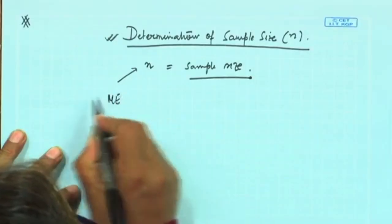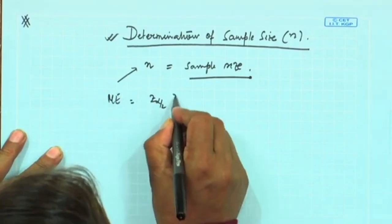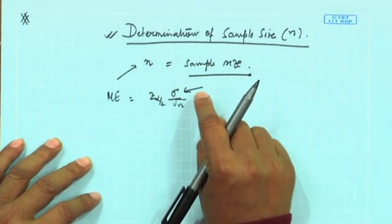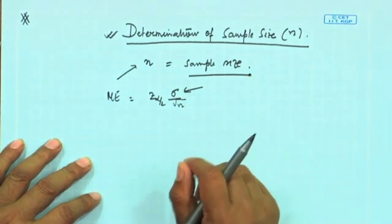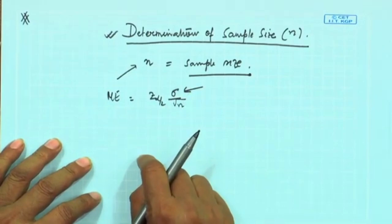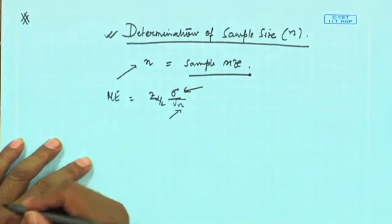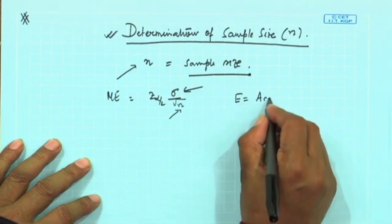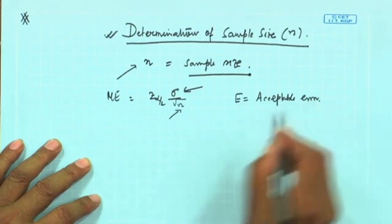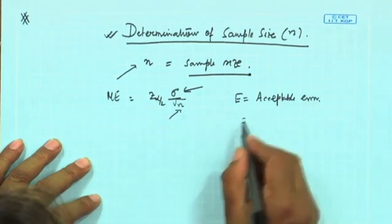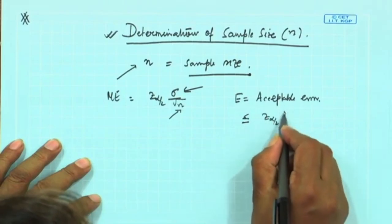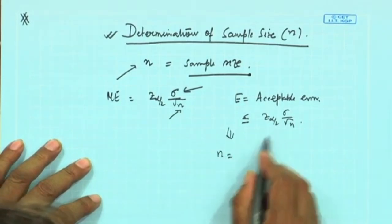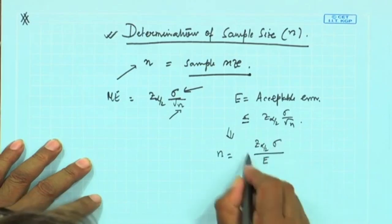So what is ME in this case? ME = z(alpha/2) * sigma/sqrt(n). You see, sigma is the population standard deviation — it is a fixed value; you do not have any control on it. Where you have control is on n. So if we say that E, the acceptable error, is less than or equal to z(alpha/2) * sigma/sqrt(n), then solving for n gives: n = (z(alpha/2) * sigma / E)^2.